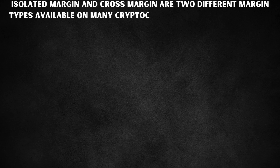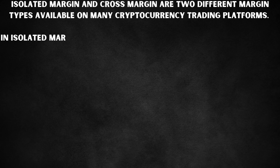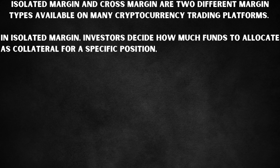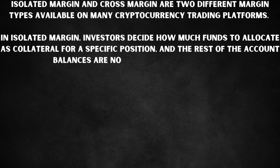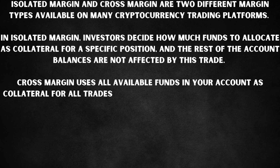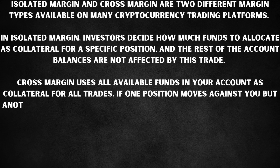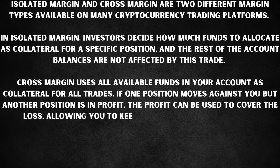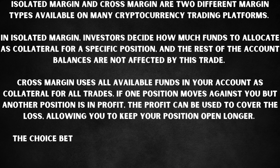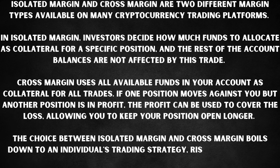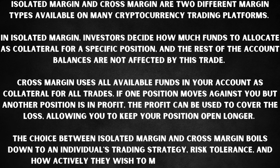Isolated margin and cross margin are two different margin types available on many crypto trading platforms. In isolated margin, investors decide how much funds to allocate as collateral for a specific position, and the rest of the account balances are not affected by this trade. Cross margin uses all available funds in your account as collateral for all trades. If one position moves against you but another is in profit, the profit can be used to cover the loss, allowing you to keep your positions open longer.